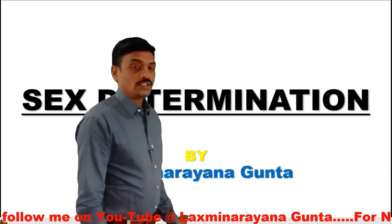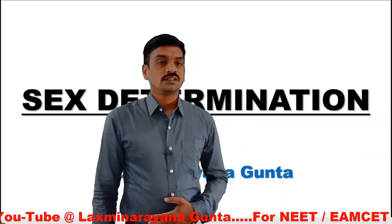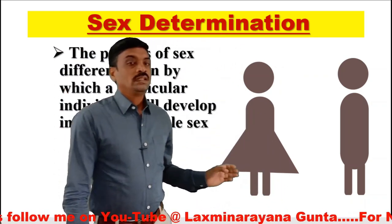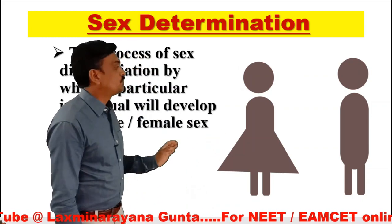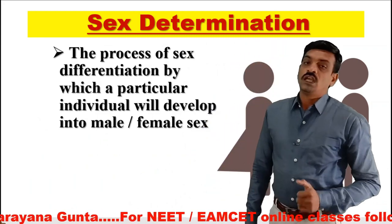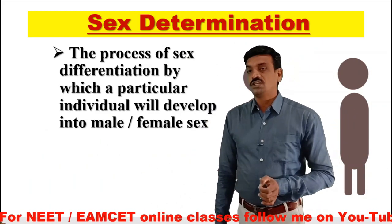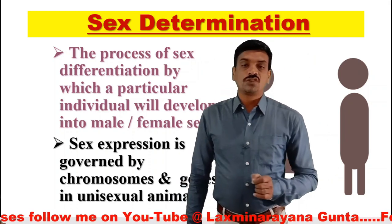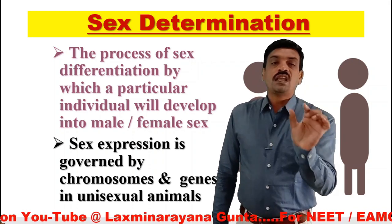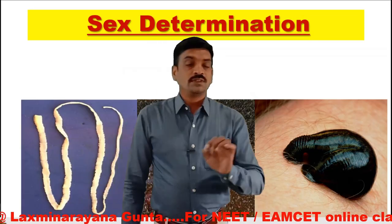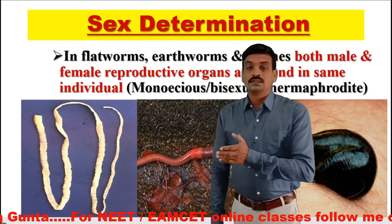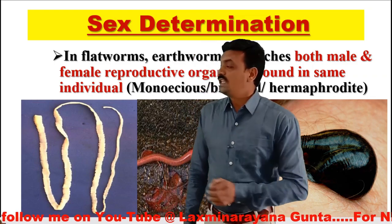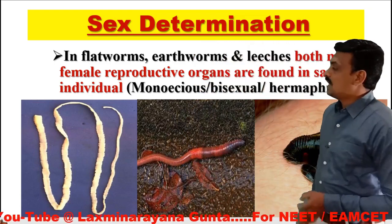Today in our genetics, we are going to discuss sex determination — whether an individual is a male or a female — and the process of sex differentiation by which a particular individual develops into a male or female, called sex determination. This sex expression is governed by chromosomes and genes in unisexual animals, where a single sex is present in each individual. In some invertebrates like Taenihelmenthes, annelids like earthworms and leeches, both male and female reproductive organs are found in the same individual — they are called monoecious, bisexual, or hermaphrodite.